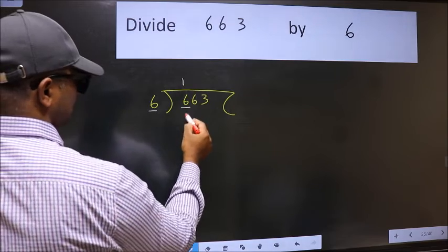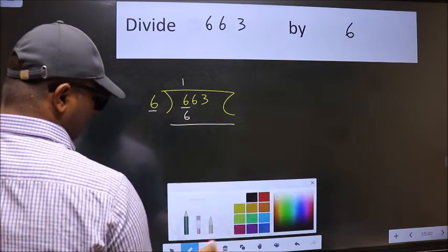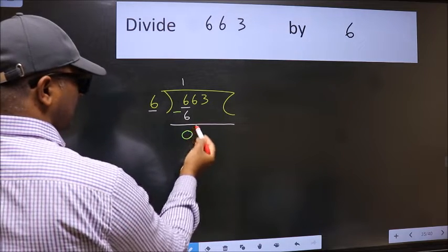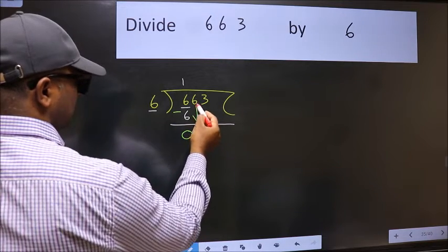So 6 down. When do we get 6 in the 6 table? 6 ones 6. Now we subtract, we get zero. After this, bring down the beside number.